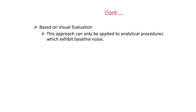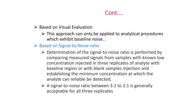Based on visual evaluation, this approach can only be applied to analytical procedures which exhibit baseline noise. This approach is rarely used in the industries and it is used for non-instrumental methods. Based on signal-to-noise ratio, this approach is widely used in the industries to establish DL concentration. Determination of the signal-to-noise ratio is performed by comparing measured signals from samples with known low concentrations injected in three duplicates of analyte with baseline region or with blank sample injections, establishing the minimum concentration at which the analyte can reliably be detected.